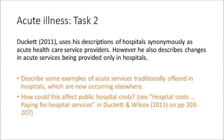Here is task two. Duckett uses his descriptions of hospitals synonymously as acute healthcare service providers. However, he also describes changes in acute services being provided only in hospitals. I would like you to do two things: describe some examples of acute services traditionally offered in hospitals which are now occurring elsewhere, and secondly, how could this affect public hospital costs? The hint here is to see the 'Hospital Costs: Paying for Hospital Services' section in Duckett and Wilcox, specifically pages 203 to 207.